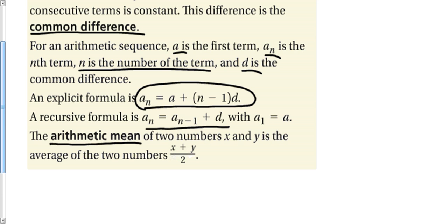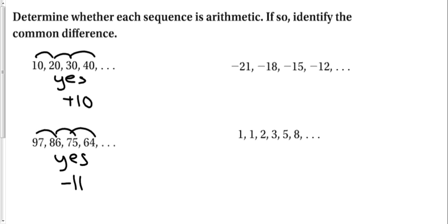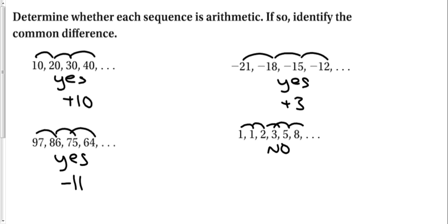We also have a definition for the arithmetic mean: take two numbers, add them together, and divide by 2, and you get the number in the middle. Now, determine whether each sequence is arithmetic. This first one is arithmetic because we are going up by 10. The next one we are going down by 11 — it's okay to go down. Another one is yes, plus 3. And finally the last one has a different difference each time, so that's a no — it's a sequence, just not an arithmetic one, though it does have a pattern.